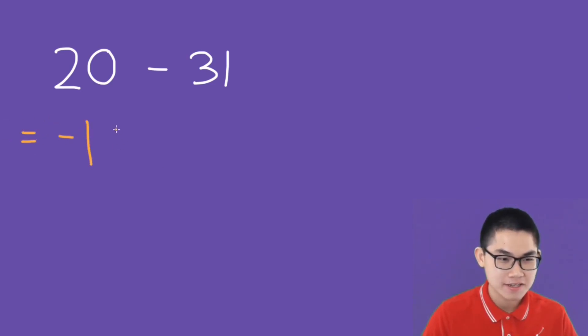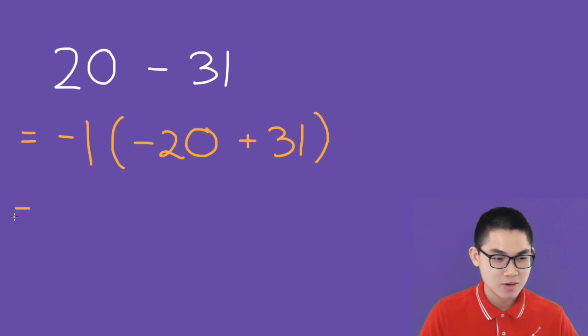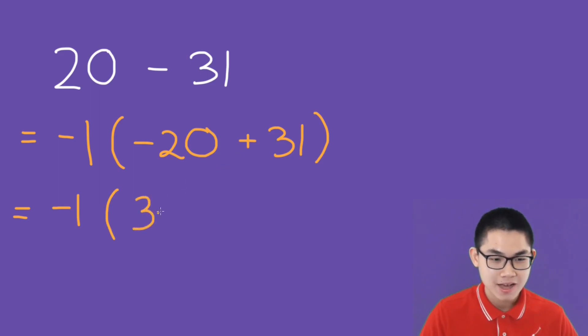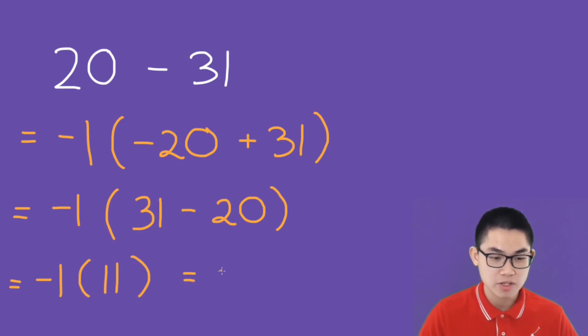20 minus 31. I will use the second way since it's faster. So you factor out negative 1 and flip the sign. Positive 20 becomes negative 20 and negative 31 becomes positive 31. This is equal to negative 1 times negative 20 plus 31, the same as 31 minus 20. This is equal to negative 1 times 11, and that gives you negative 11. So this is the final answer.